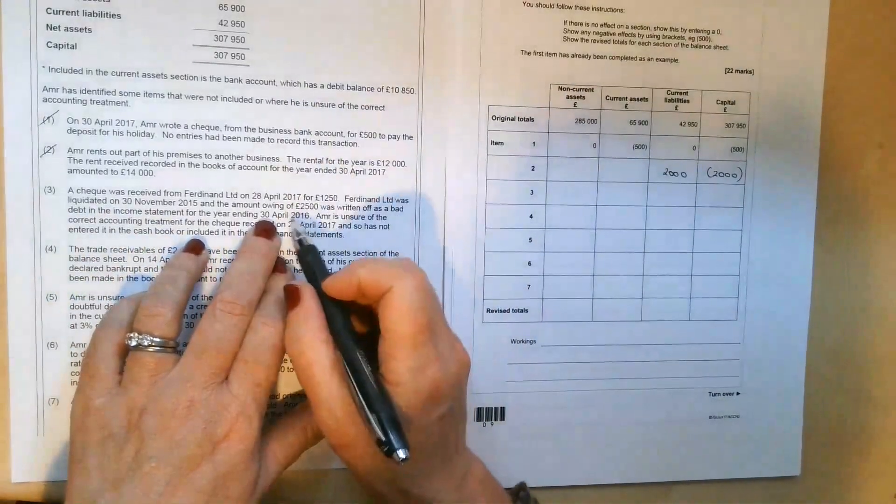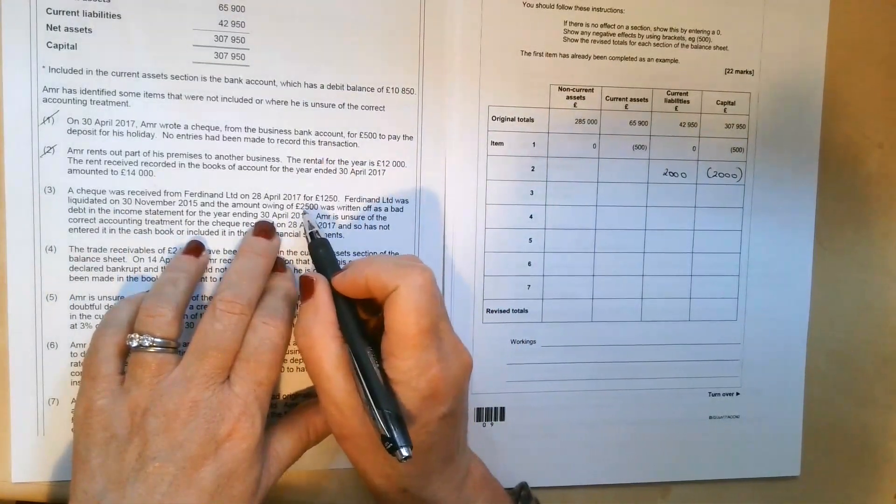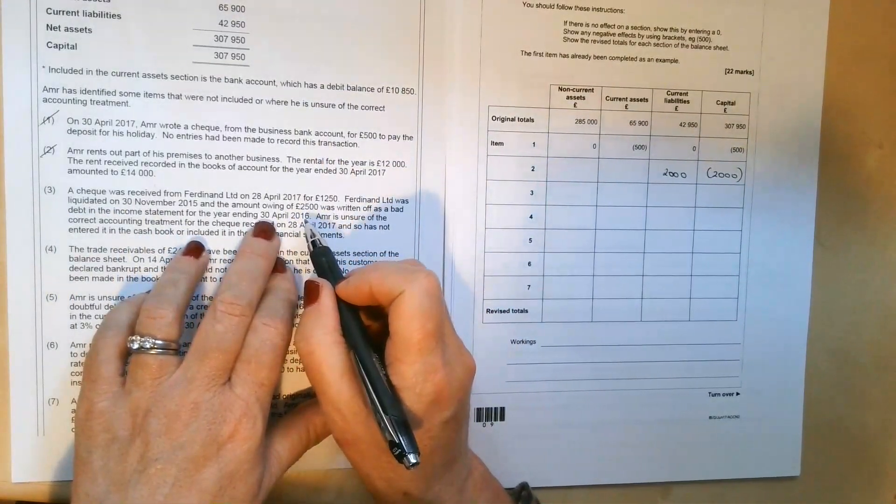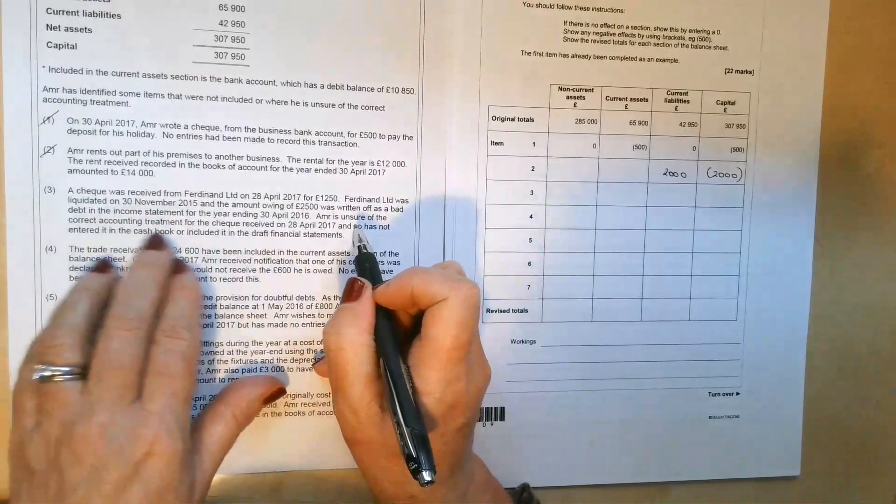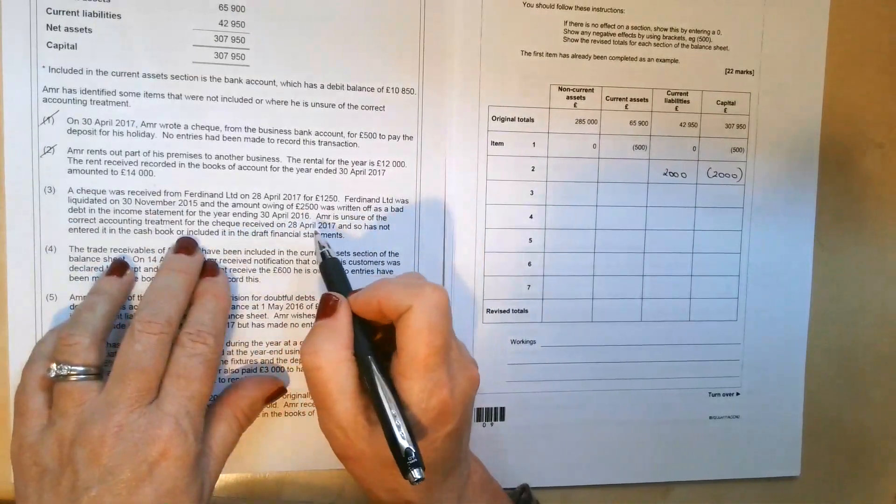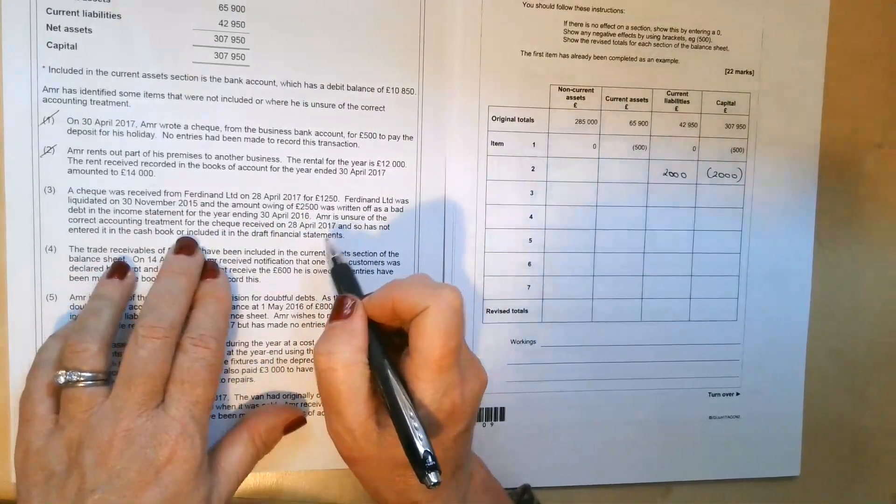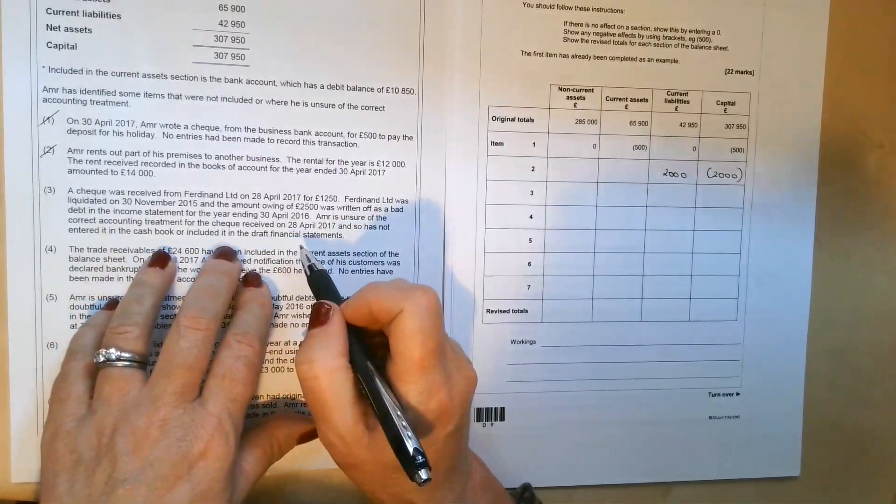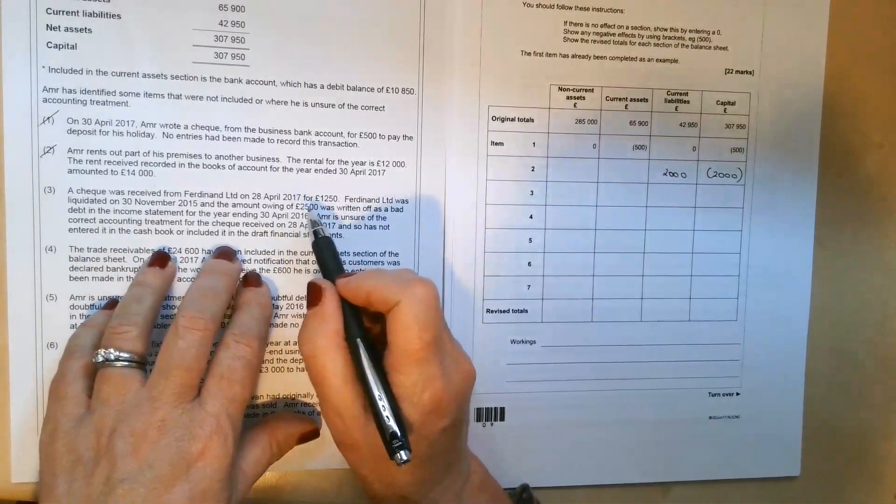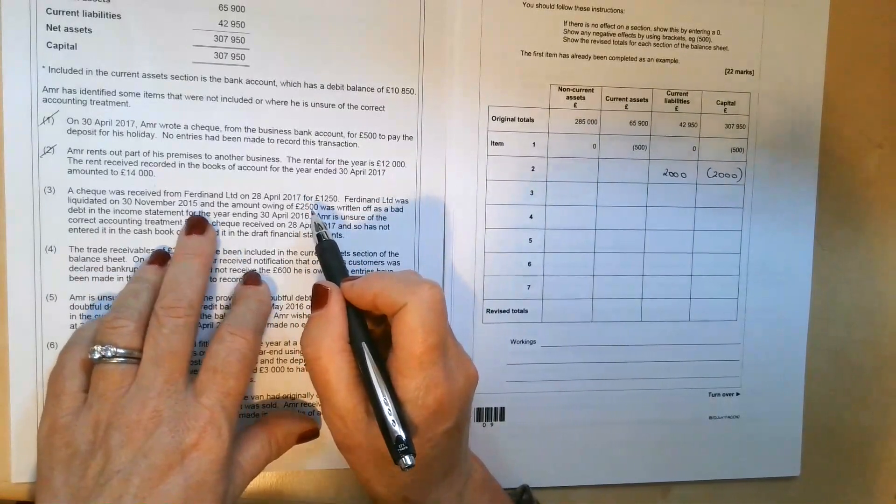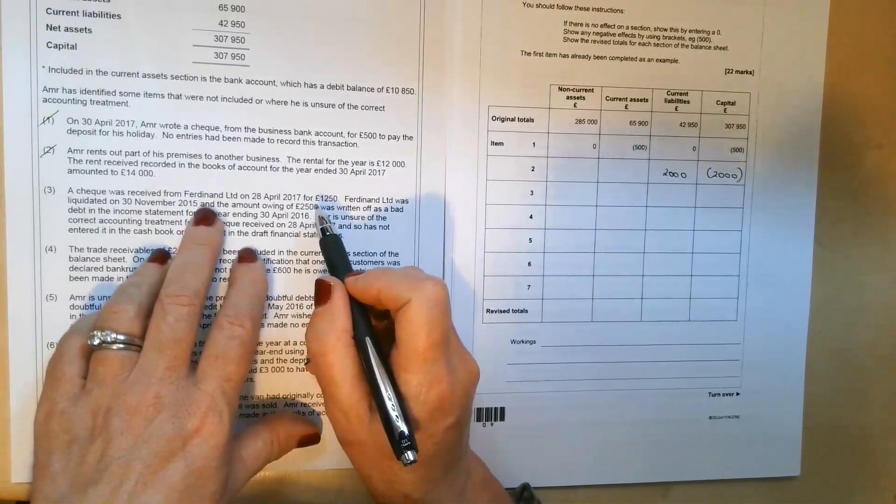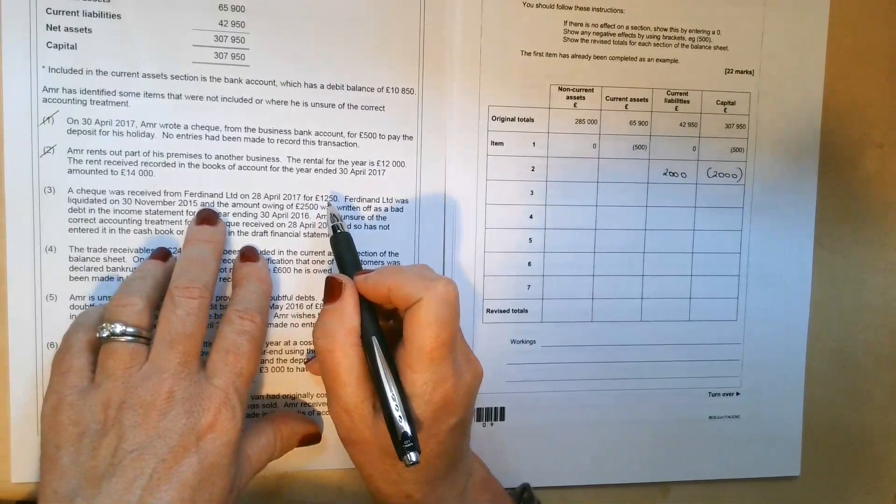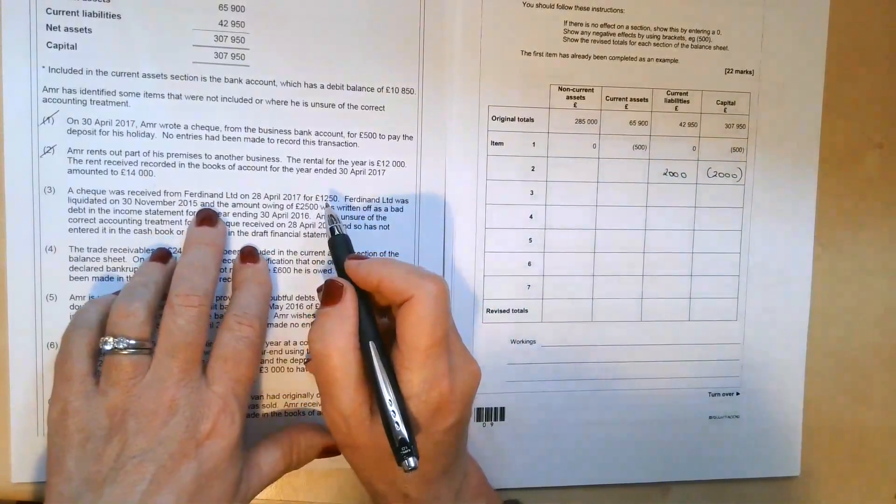So that's the year before the one we're dealing with. So they've already written off an irrecoverable debt of £2,500. Amir is unsure of the correct accounting treatment for the cheque received on the 28th of April 2017. And so it's not yet entered it in the cash book or included it in the draft financial statements. So we can ignore this £2,500. That's an irrecoverable debt that was written off last year. But we've got £1,250, which is an irrecoverable debt recovered.